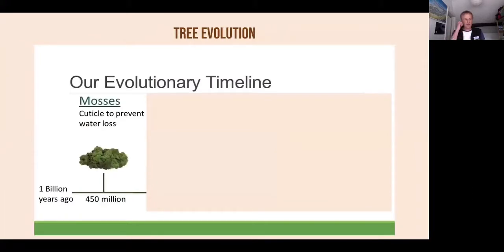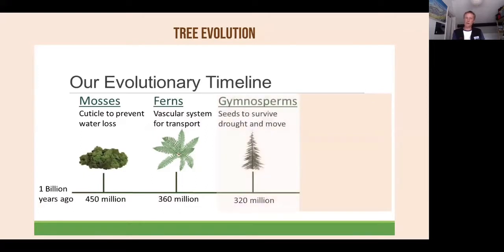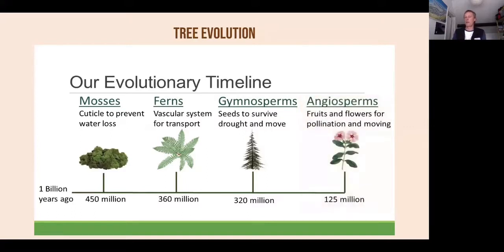To put some perspective on evolution: the oldest plants, mosses, date back half a billion years. Spore-bearing ferns date back 360 million years. Gymnosperms arrived in the late Carboniferous era. Flowering plants — fruits, flowers, and pollination — came at the end of the Triassic period and rose to dominance around 100 million years ago. There are about 1,000 gymnosperms in the world, whereas there are 300,000 flowering plants.